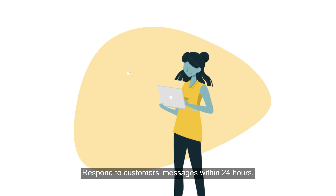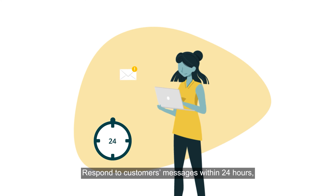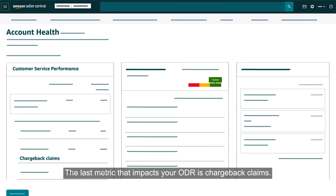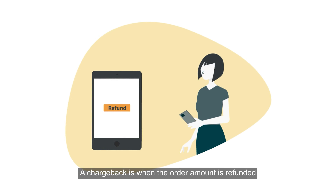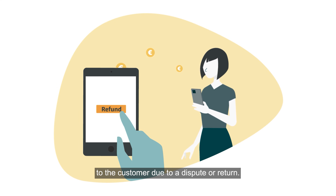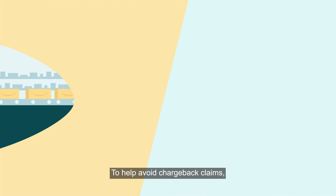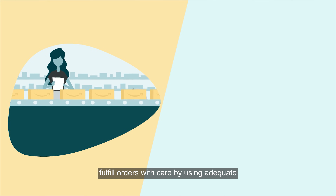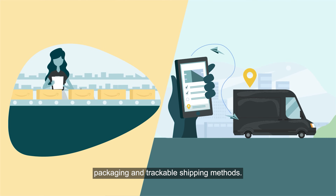Respond to customer messages within 24 hours and do your best to resolve any issues. The last metric that impacts your ODR is chargeback claims. A chargeback is when the order amount is refunded to the customer due to a dispute or return. To help avoid chargeback claims, fulfill orders with care by using adequate packaging and trackable shipping methods.